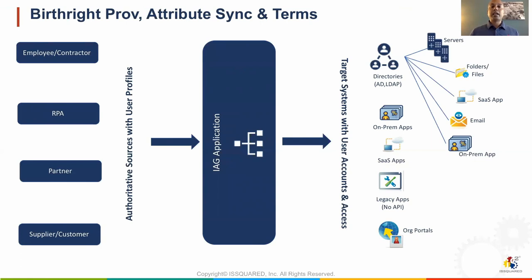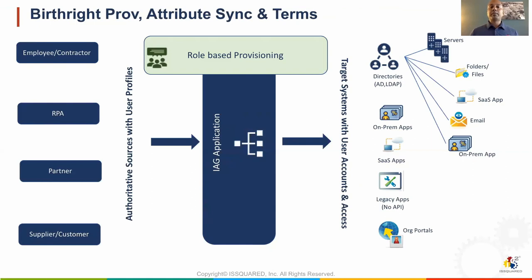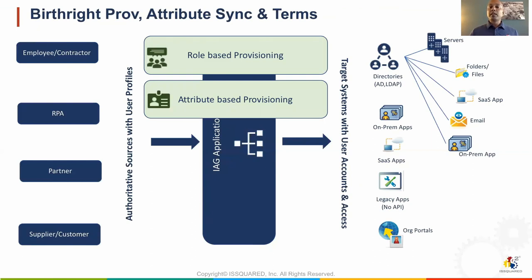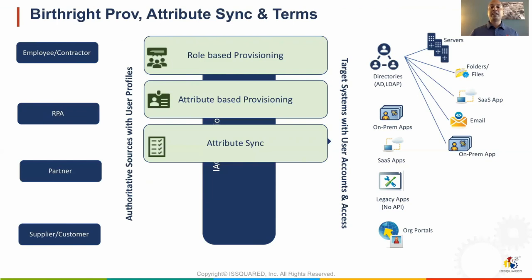Now you have your data aggregated and correlated — at least most of it. The next step is to automate some of the identity management processes. Start with your major applications and systems, then repeat the same for the other applications you have brought into your IAG platform. Define the policies that will automate birthright provisioning based on roles and attributes. Provision the default access the user should get when onboarded, including mapping of attributes from user profiles to accounts on the managed targets. The basic entitlements can be assigned based on the user's roles or attributes. Also start pushing the data into accounts that were previously aggregated — this will clean up the account data on the targets and keep it consistent with the authoritative sources.